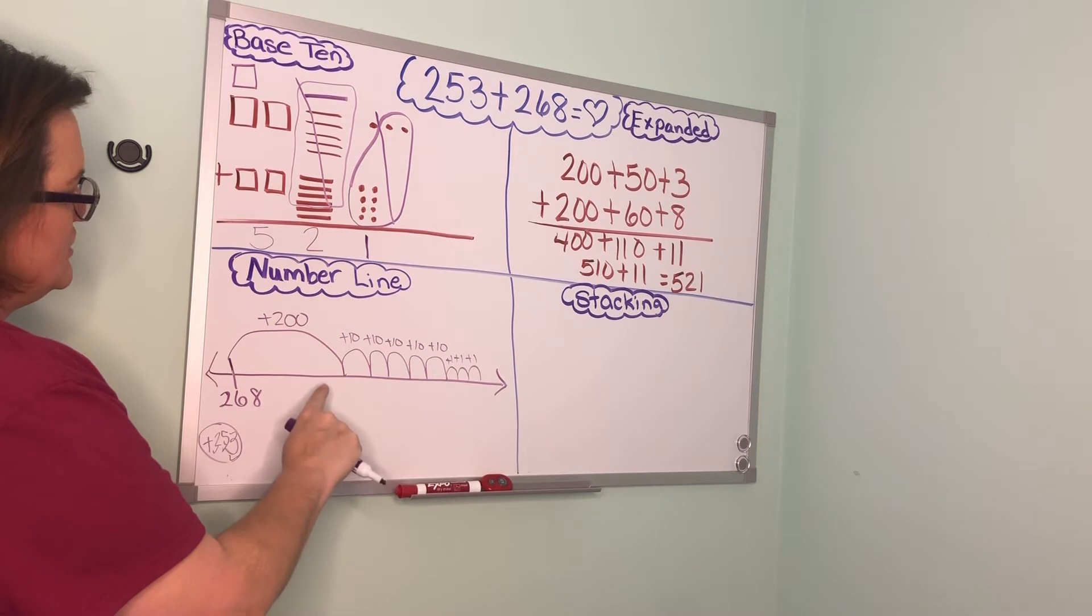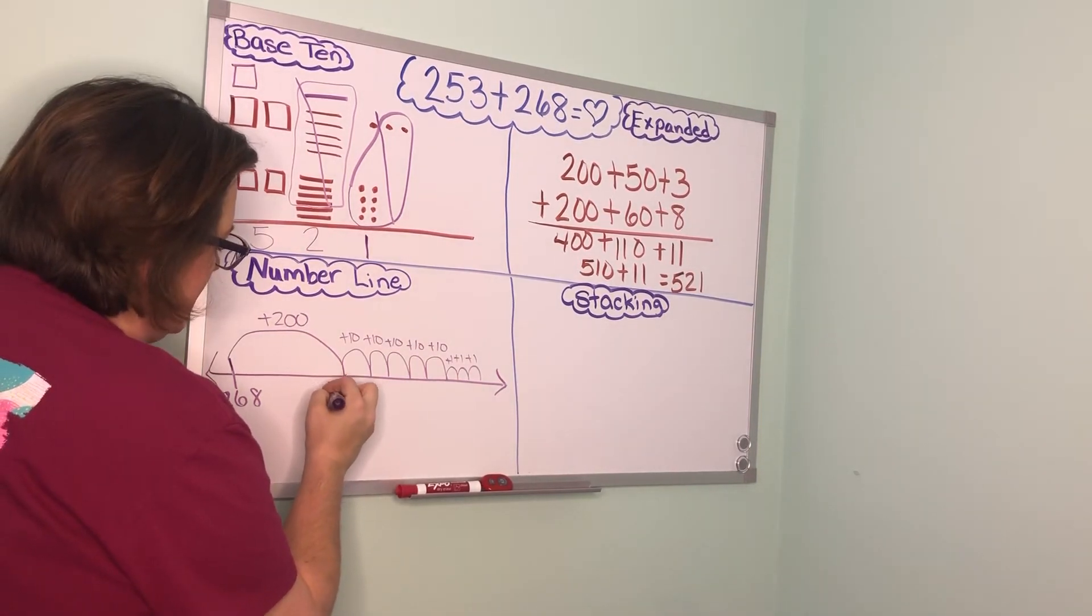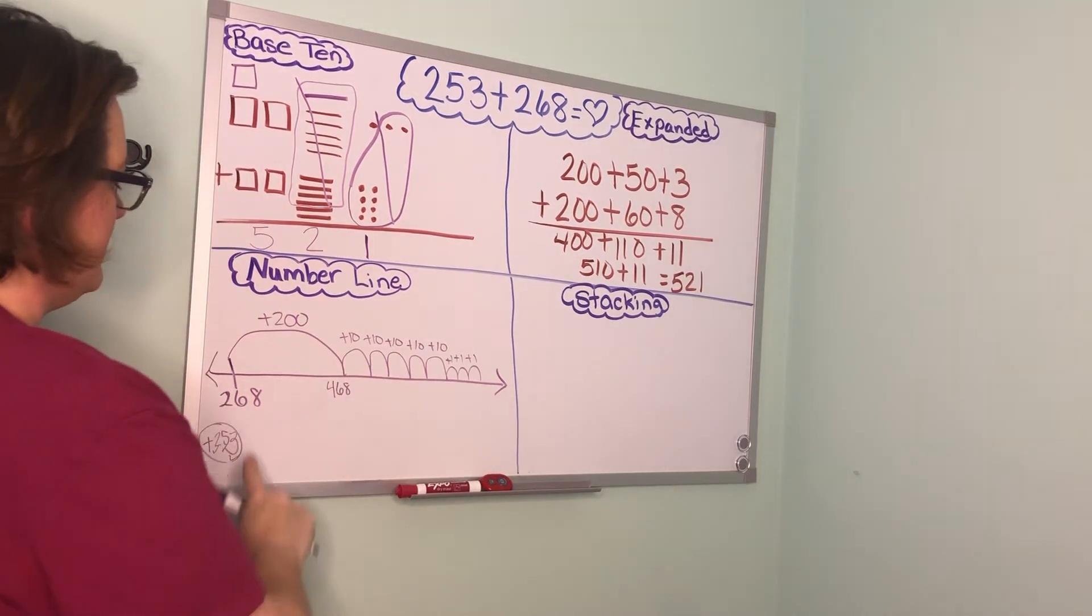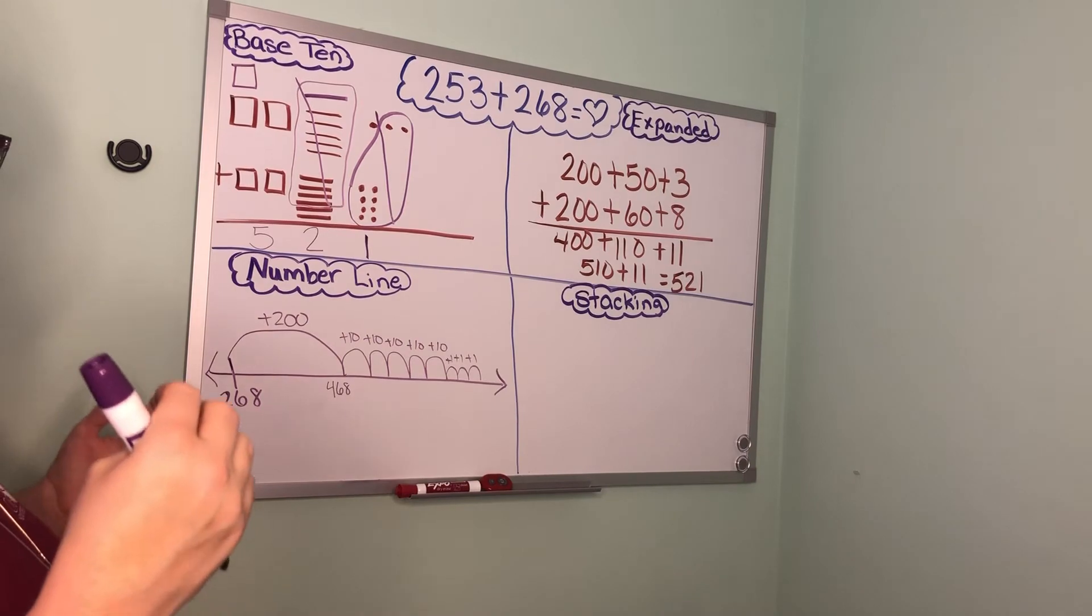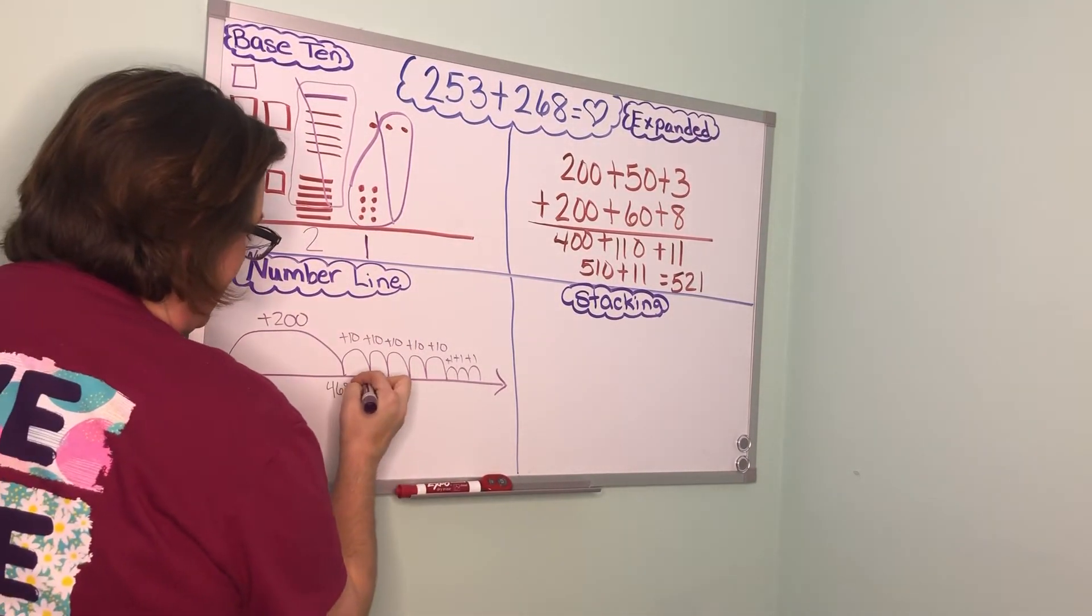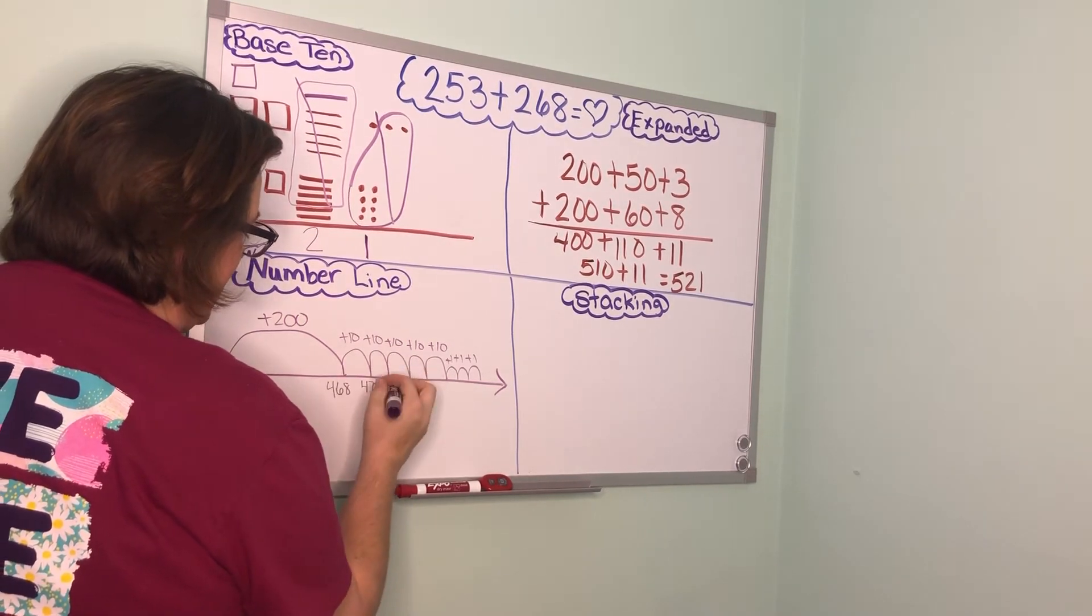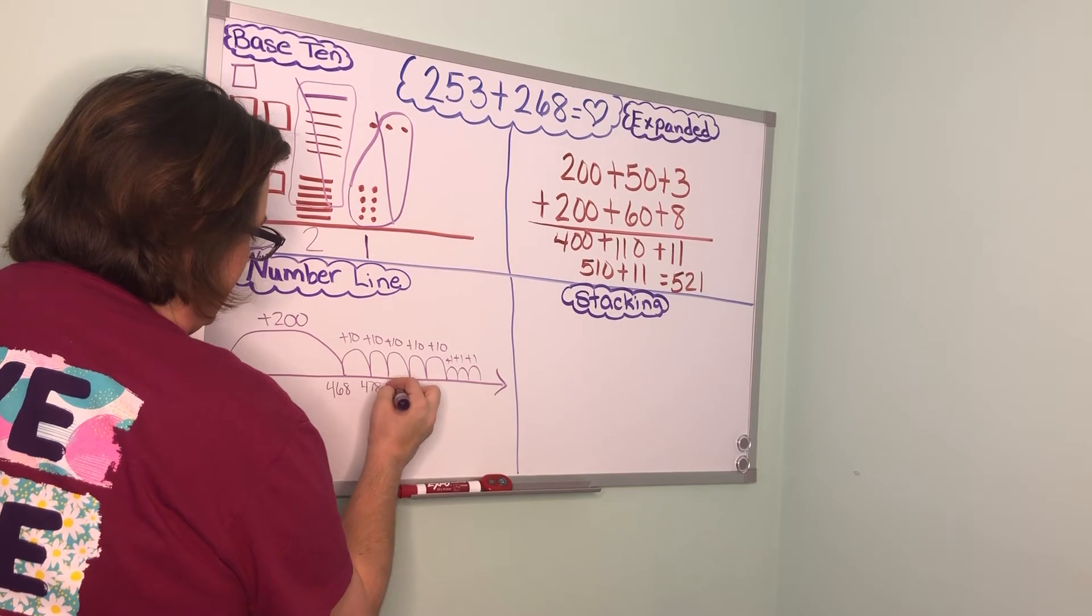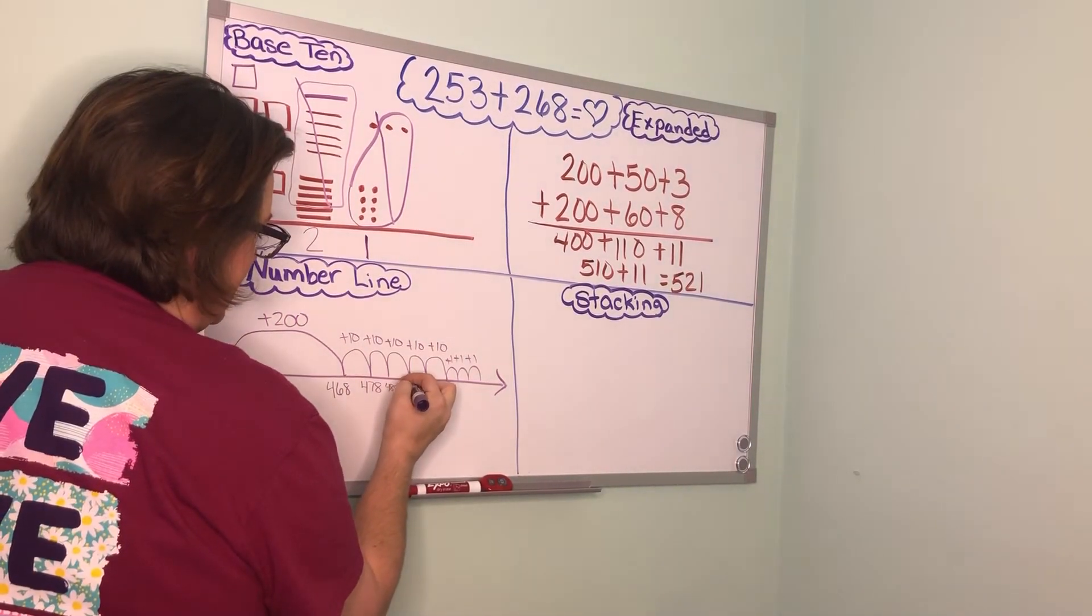268 plus 200 gives me 468. Now I am ready to hop 10 more. Remember we are adding 10. So 468 plus 10 is 478. 478 plus 10 is 488. 488 plus 10 is 498.